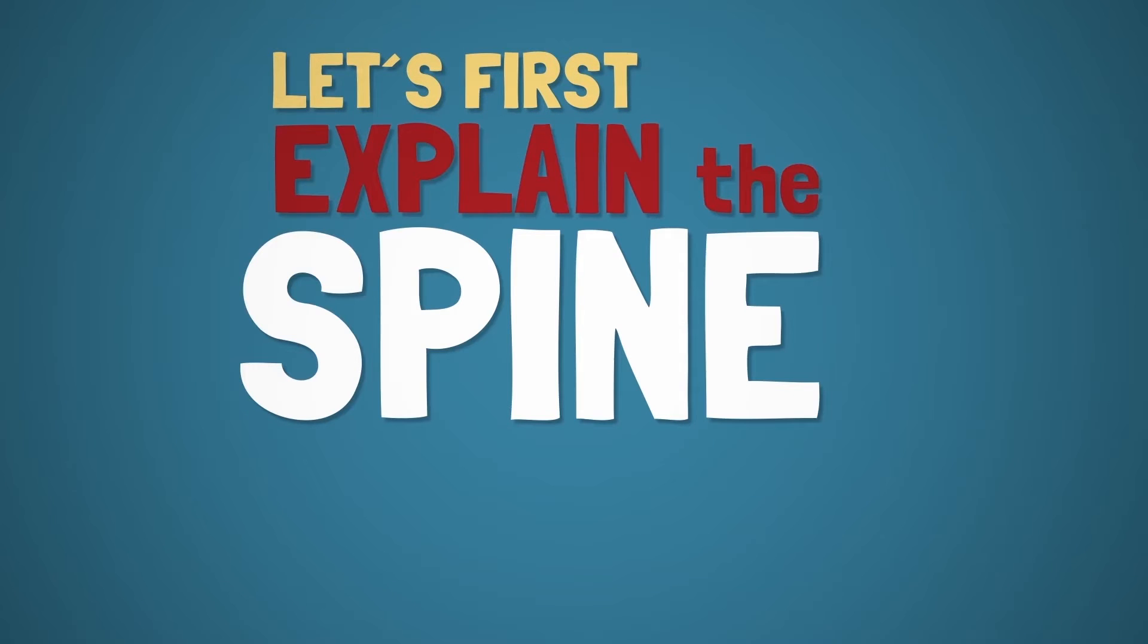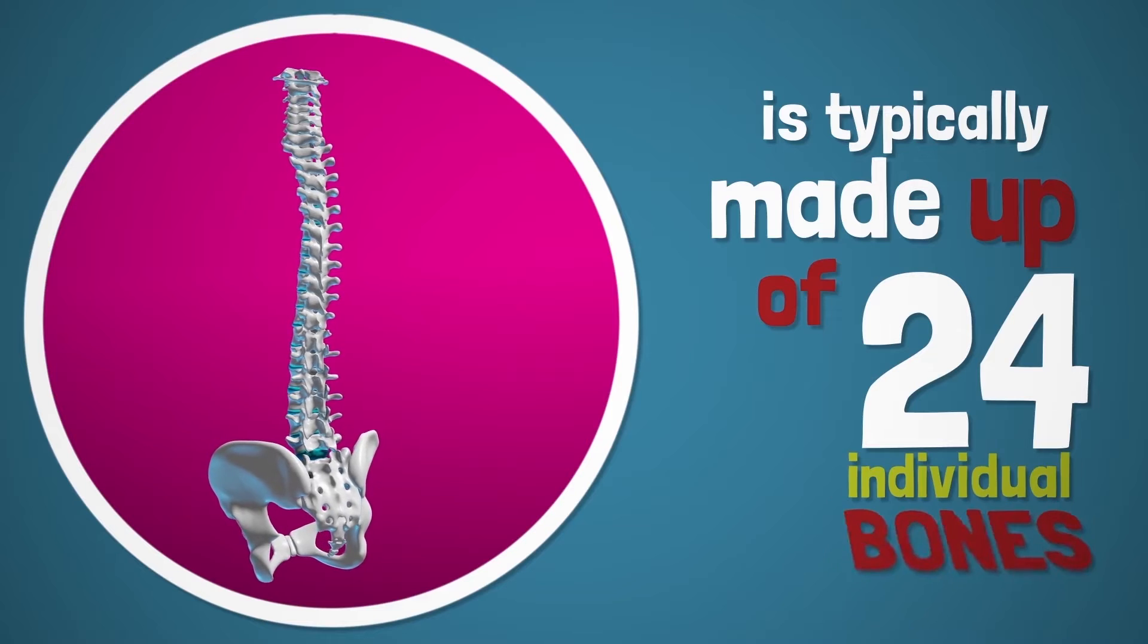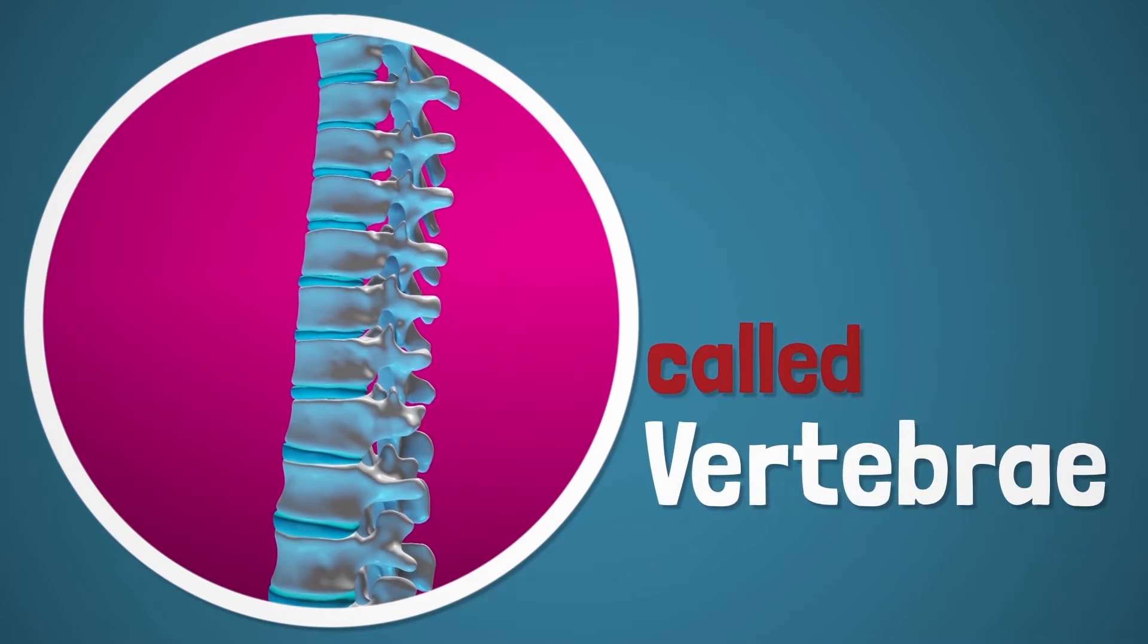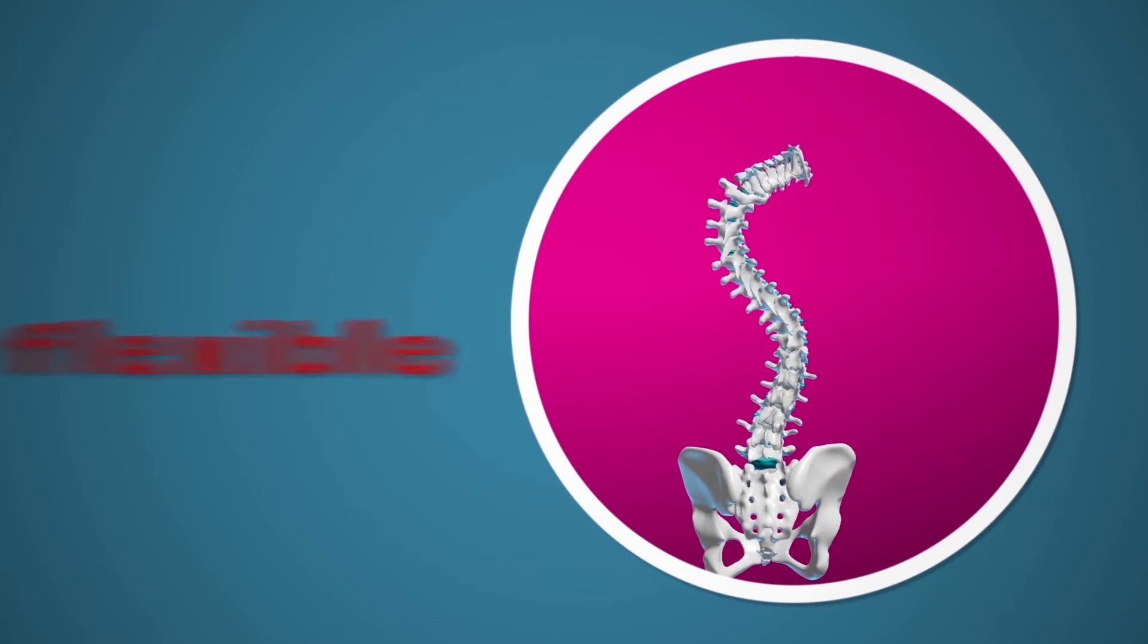Let us first explain the spine. The spine is typically made up of 24 individual bones called vertebrae that are separated by discs. The discs allow the spine to be flexible.